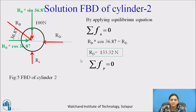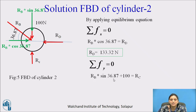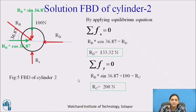Using summation FY = 0: three forces act in the Y direction — 100 Newton (downward), RC (upward), and RB sin(36.87°) (upward). Setting upward forces equal to downward forces: RC = RB sin(36.87°) + 100. Substituting the value of RB gives RC = 200 Newton.